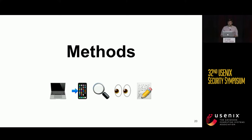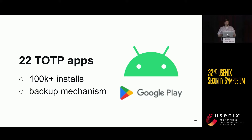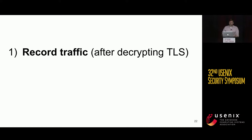We identified all general-purpose TOTP apps in the Google Play Store and filtered for apps with at least 100,000 installs that offered a backup mechanism. There were 22 apps that fit this criteria — you can see the specific versions in Table 1 in the paper. For each of these 22 apps, we recorded plain-text traffic specifically while adding, backing up, and recovering TOTP accounts, using a custom QR code with unique values so we could look for those values later in the network capture.